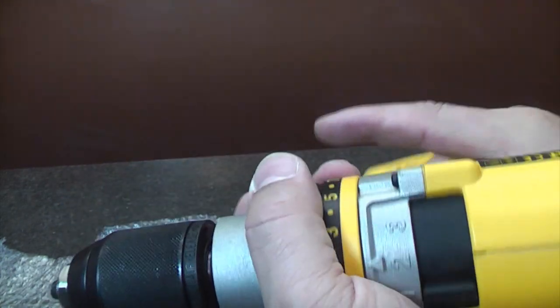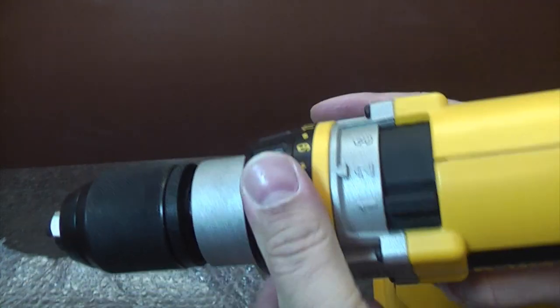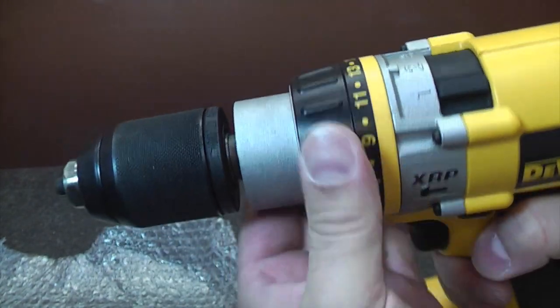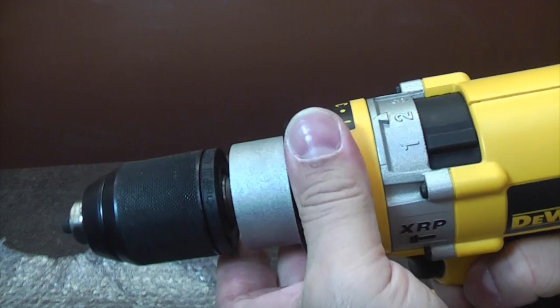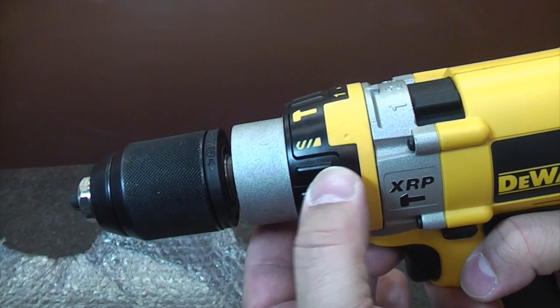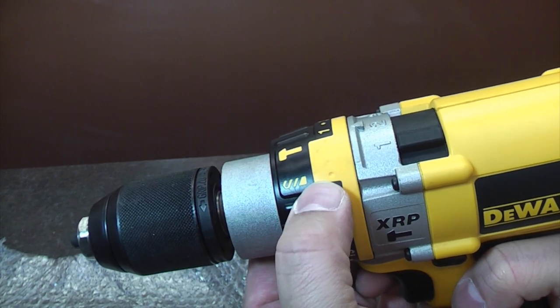I'm going to demonstrate now how to change the clutch and torque mechanism, which is this band here, because that can break over time. That's the bit that actually controls the torque of the drill and puts it in hammer action or into the drill position.